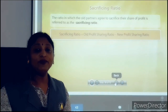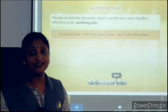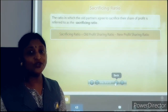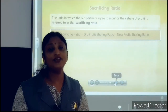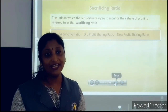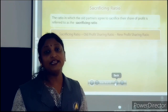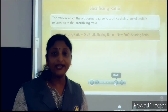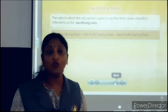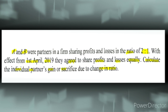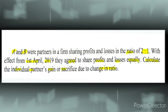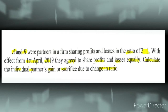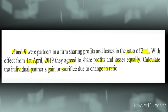The formula for sacrificing ratio is: Sacrificing Ratio = Old Profit Sharing Ratio minus New Profit Sharing Ratio. We shall be learning in detail how to calculate the sacrificing ratio with a question. A and B were partners in a firm sharing profits and losses in the ratio of 2 is to 1.